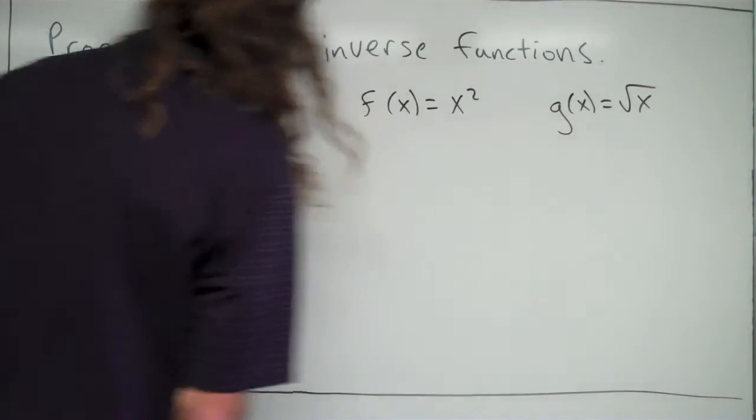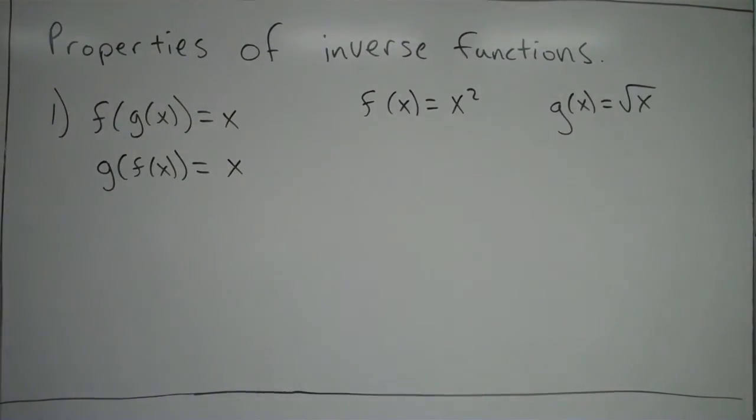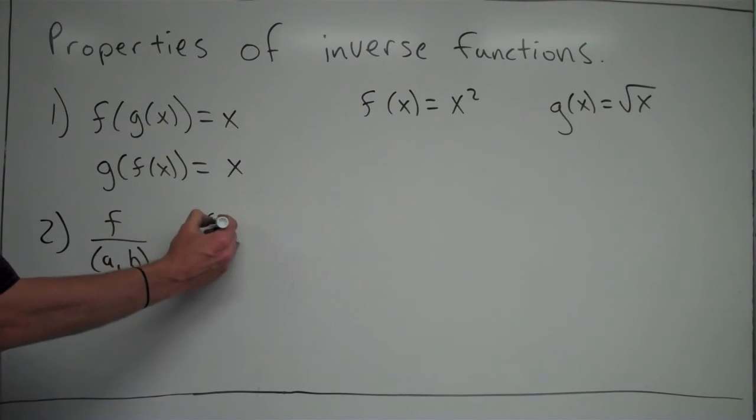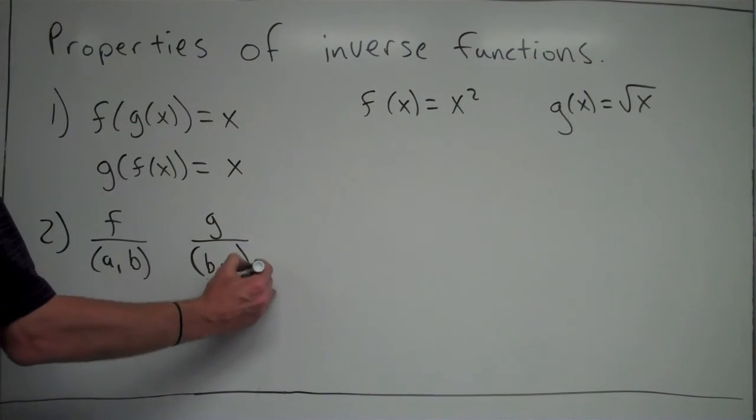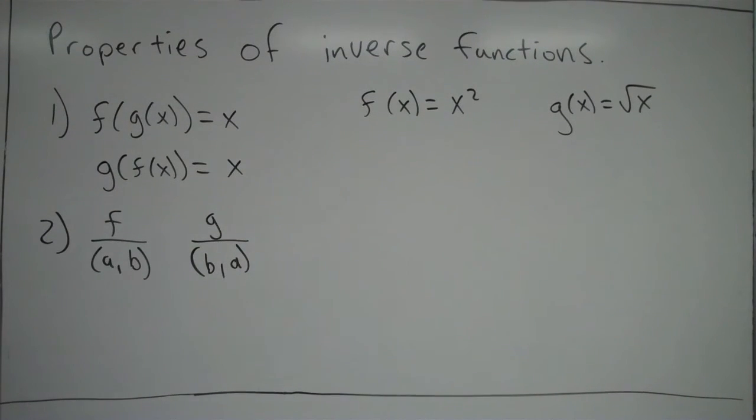Another thing that happens with inverse functions is that if on the graph of f you have the point a comma b, that means that on the graph of g you have the point b comma a. So your domain and range are basically kind of switched for your two functions.